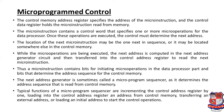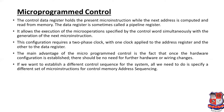The first function of the micro program sequencer is to increment the control address register by one. The second is the work of the control memory to load the address into the control address register. The third is to transfer an external address or load an address to start the control operation. When the CPU executes an instruction, this is done through the micro program sequencer. The control data register holds the present micro instruction while the next address is computed.